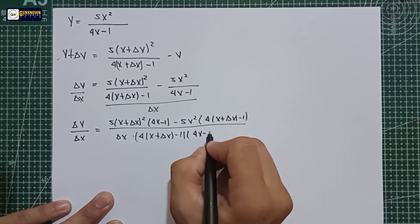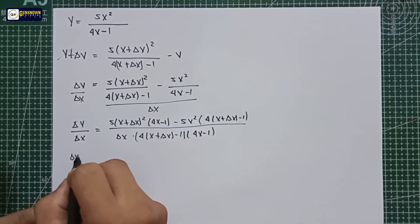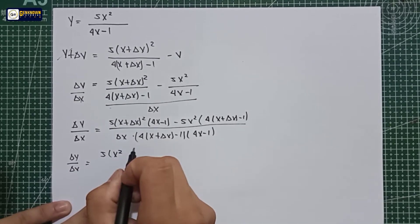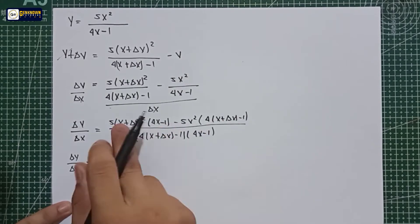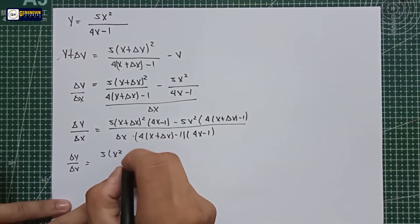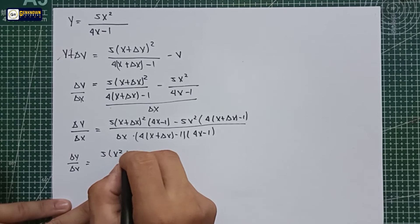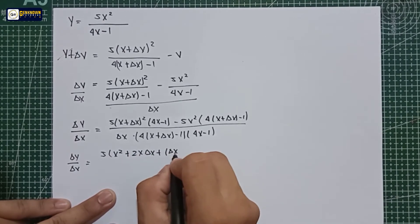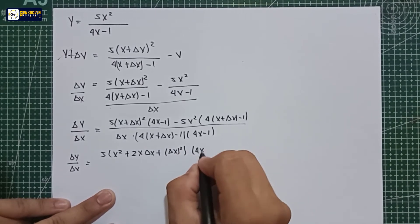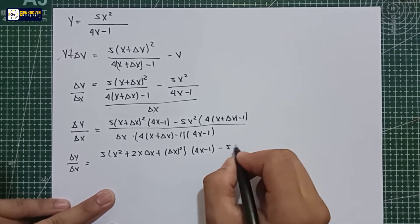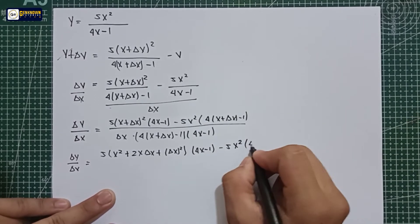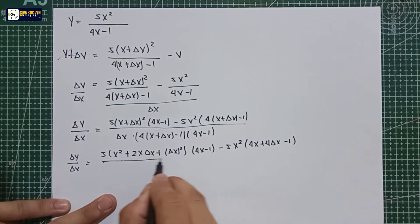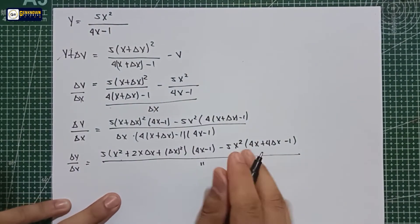So delta y over delta x: the next step is to distribute in the first part and then distribute in the second part and then expand. We get 5(x squared plus 2x·delta x plus delta x squared) multiplied by (4x minus 1), minus 5x squared multiplied by (4x plus 4·delta x minus 1), all over the denominator — just copy the denominator.